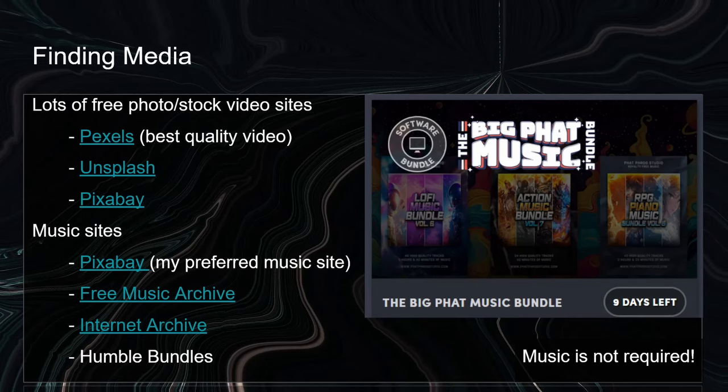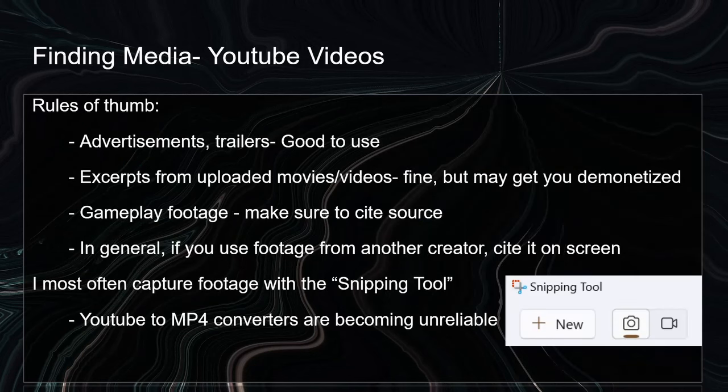Another way I get media is through YouTube videos. There's probably some ethical dilemma to taking videos that have already been uploaded to YouTube, and you can make that decision for yourself. But what I typically try to do is: if it's an advertisement or a game trailer, I think that's completely fine to use — whenever I've used them, YouTube does not flag them in any way. And especially if they're from a big company, I think that's completely fine to repurpose. They're made to be seen. Sometimes smaller creators will upload full excerpts from a movie or a video, and you can certainly pull those in. YouTube doesn't love that, and sometimes you may get demonetized. But honestly, I wouldn't worry about getting demonetized for the first couple of years of your channel unless you hit it big, in which case, congrats.